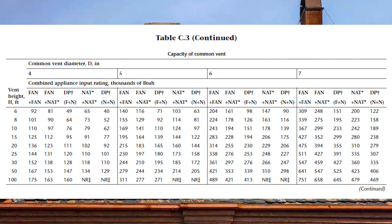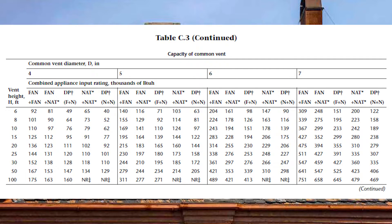The second part of table C3 starts on page 200 of the codebook and is labeled capacity of common vent — this is where we size our vent. Looking at the left-hand column we see the vent height, which is the exact same vent height used to size our vent connectors.